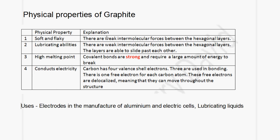Now let us look at the physical properties of graphite. Graphite is soft and flaky. The reason for this is that there are weak intermolecular forces between the hexagonal layers. Graphite also has lubricating properties, and the reason for this is that there are weak intermolecular forces between the hexagonal layers, so the layers are able to slide past each other.